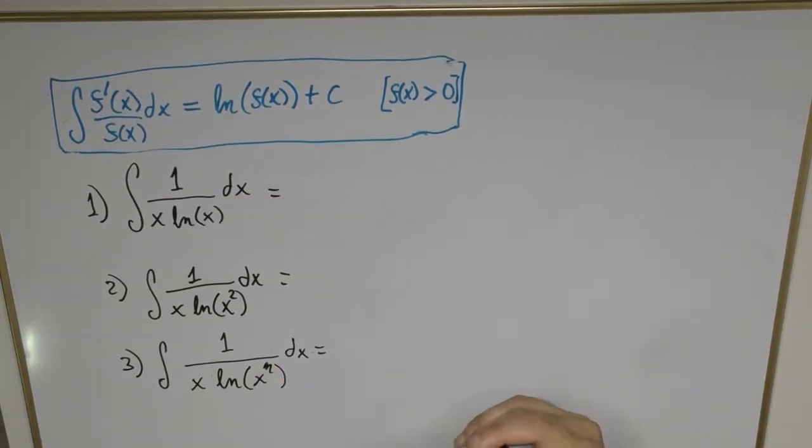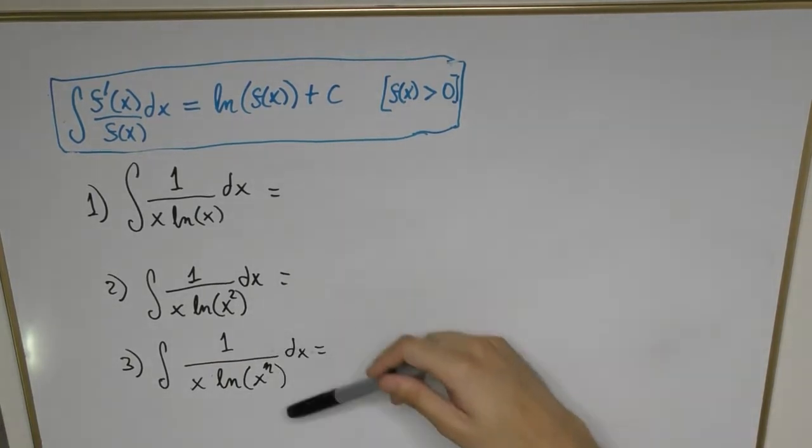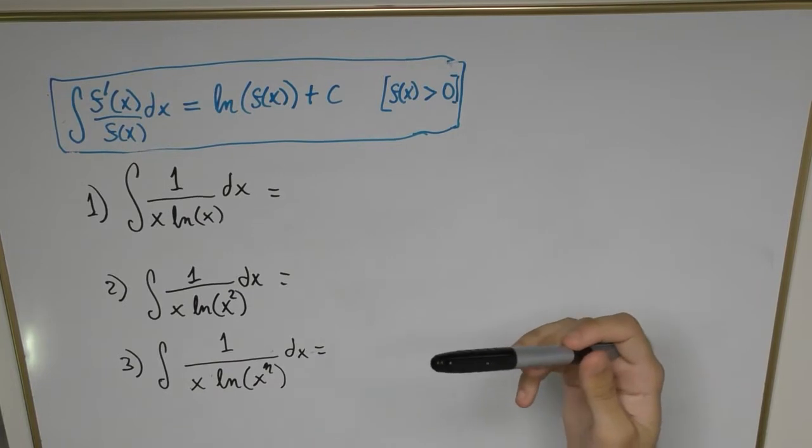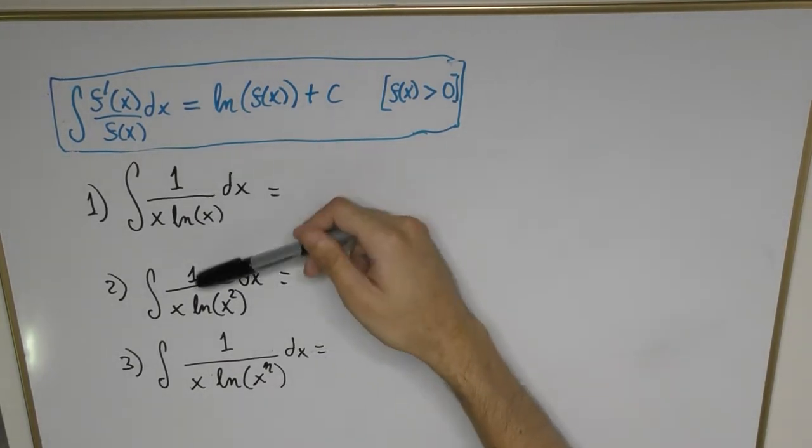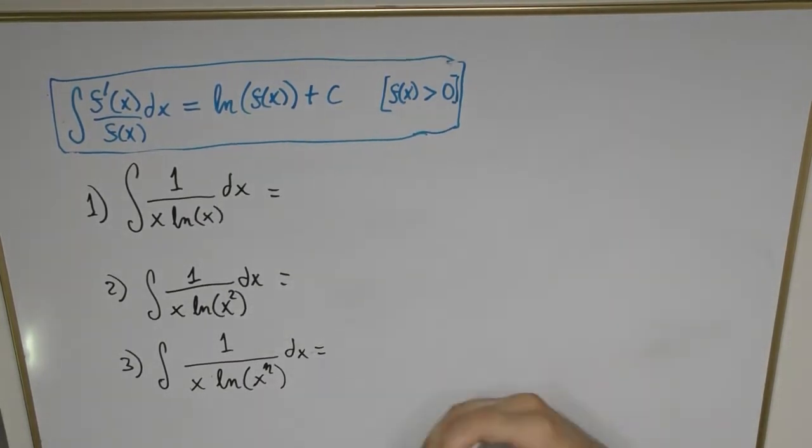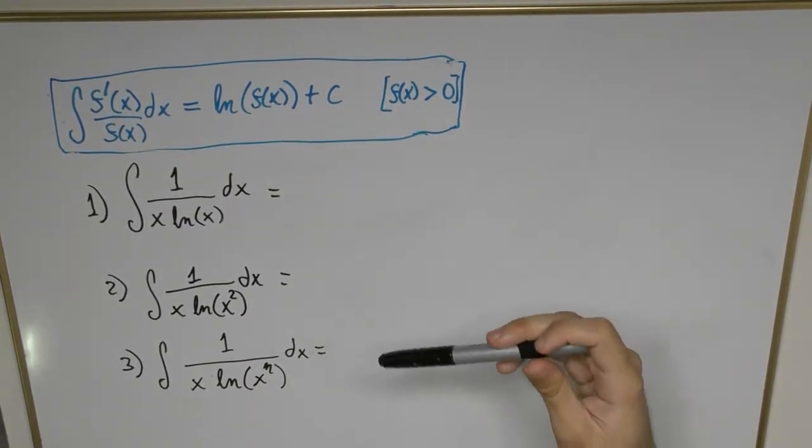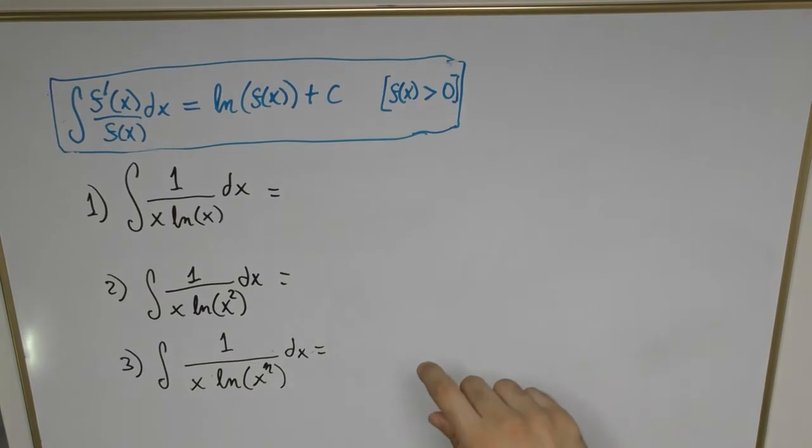Now at first glance, we can notice that everything here has a denominator which is a complex compound function of x, but the numerator is just one. So we're going to see how we can manipulate these expressions to get them into this form and hence find an integral that is going to be some natural log.